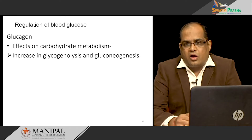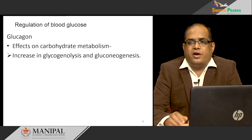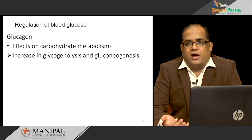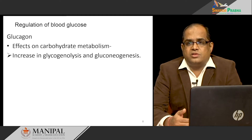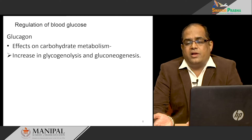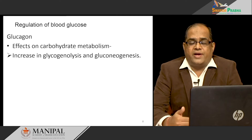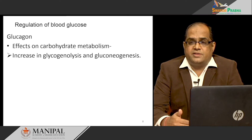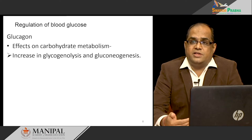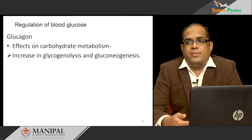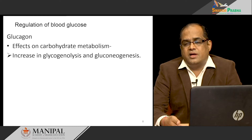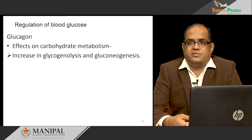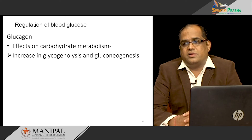Then comes the other hormone. These are both counter-regulatory hormones. On one hand, insulin is released when blood glucose level is high and it helps in decreasing the blood glucose level. On the other hand, when the blood glucose level is low — when you are in a fasting or starving condition — that is sensed by the pancreas and it releases glucagon. Glucagon is a hyperglycemic hormone; it increases blood glucose level. We will see its effects on different metabolisms.